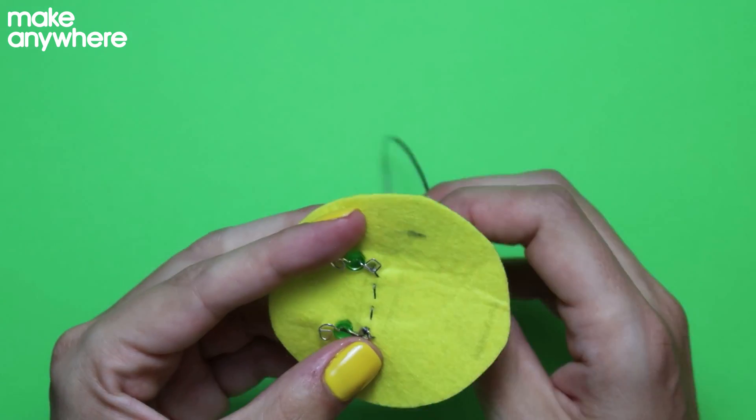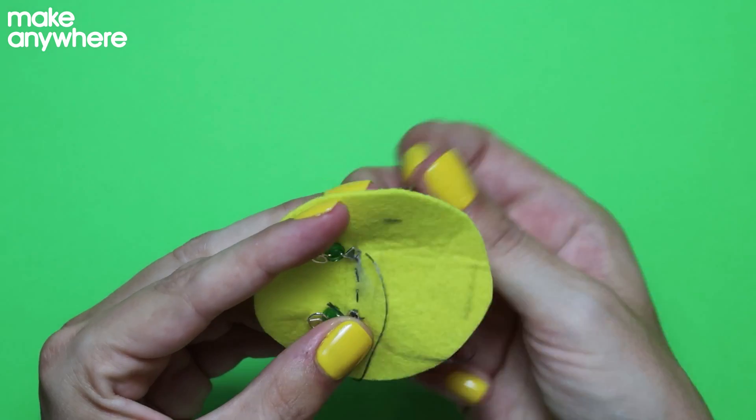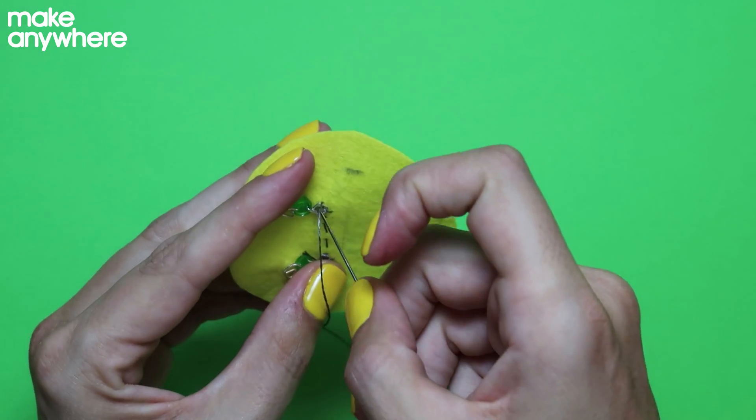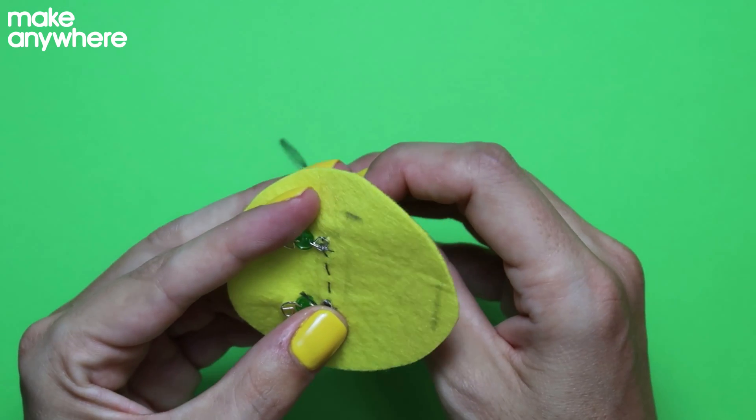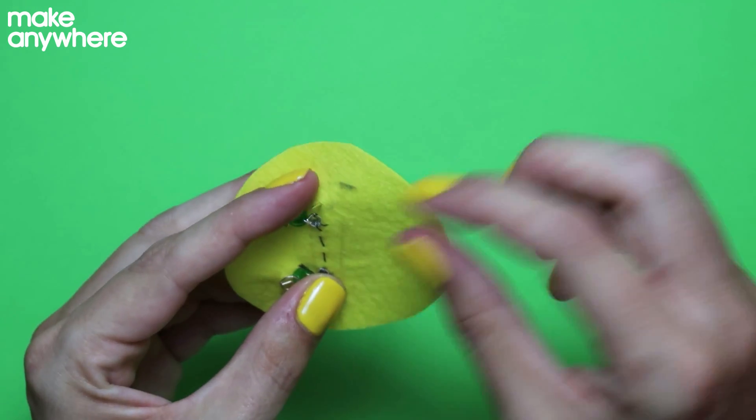Also, don't do them too big, just in case they get hooked on things. Again, go round the component three times. And our last row of stitching is to connect it up with the resistor.